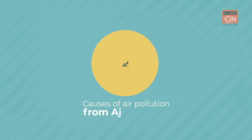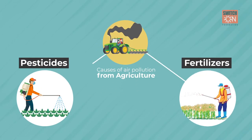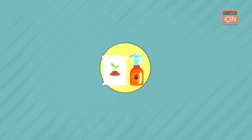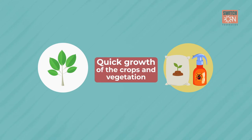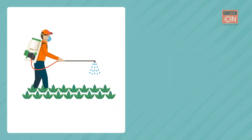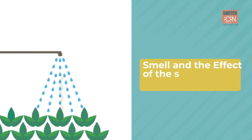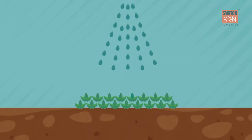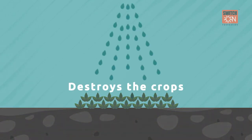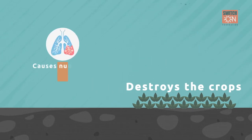Pesticides and fertilizers are the major source of air contamination in agriculture. Nowadays, pesticides and fertilizers are mixed with new invasive species not found in nature for quick growth of crops and vegetation. Once they are sprayed, the smell and effect of pesticides are left in the air. Some mix with water and some seep into the ground, which not only destroys crops but also causes numerous health-related issues.